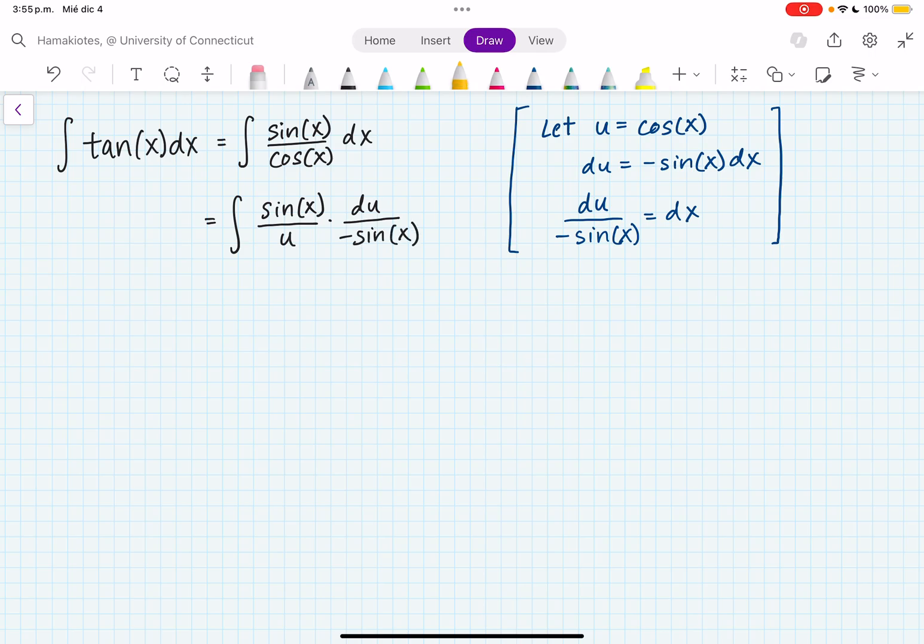Great. So now we see that we have some cancellation in the numerator and denominator. And this minus 1 sign here, I'm going to take it out of the integral. So we actually have minus the integral of 1 over u du.